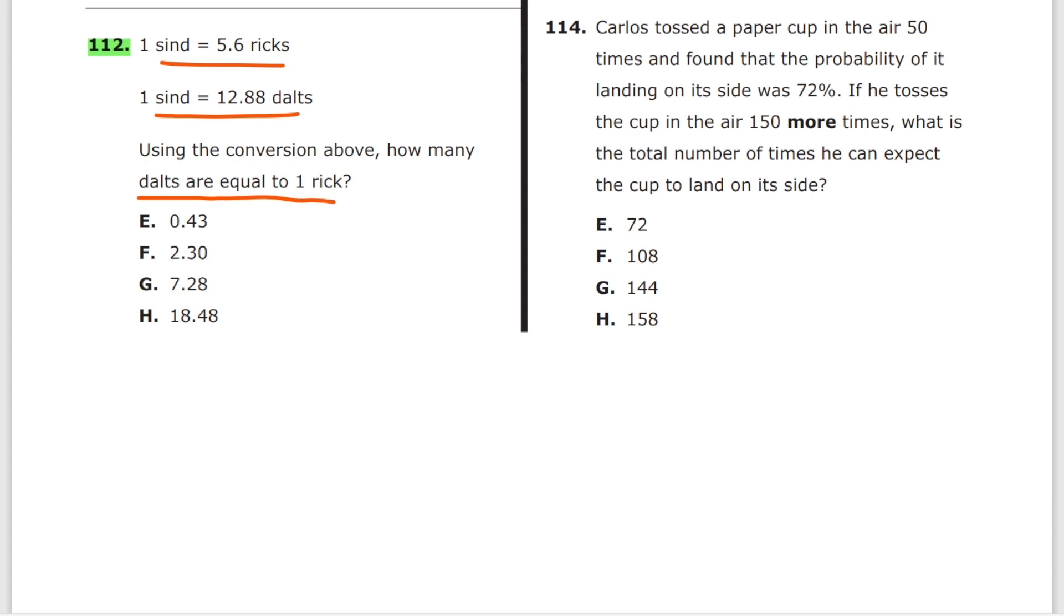What most of you will realize is that 5.6 rigs is equal to 12.88 dolts, that we just correct. From here you'll just divide by 5.6, you'll get one rig is equal to 12.88 over 5.6. That's where most of you will start the simplification process. You will either start simplifying the fraction, maybe divide this by two, this is 644 over 2.8, and you'll just keep simplifying this.